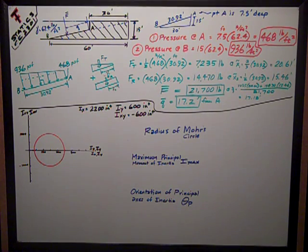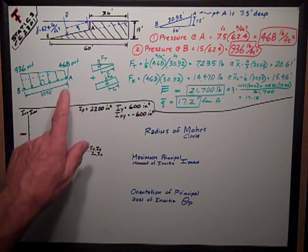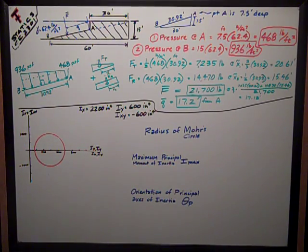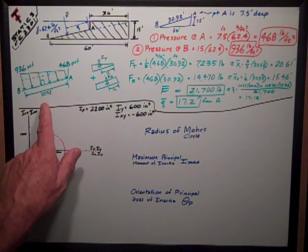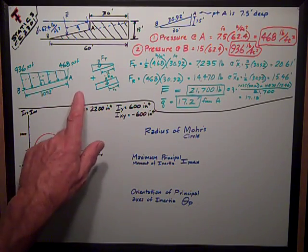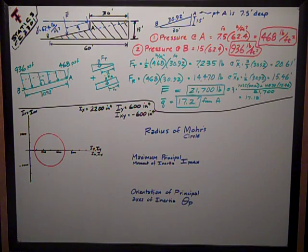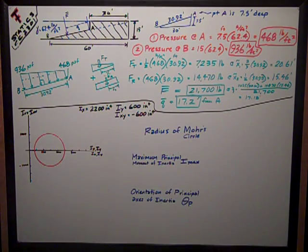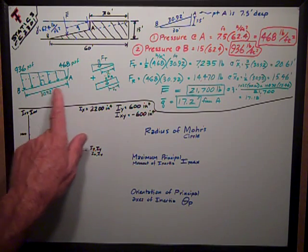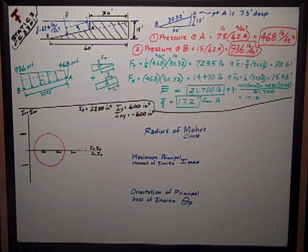The third part was to tell the resultant of the pressure acting on the sloping surface A to B. The pressure diagram looks just like this. Remember that the pressure is going to always act normal, perpendicular to the surface. The pressure at A is 468 PSF from parts 1 and 2, 936 at B. We just draw a little pressure distribution diagram here.